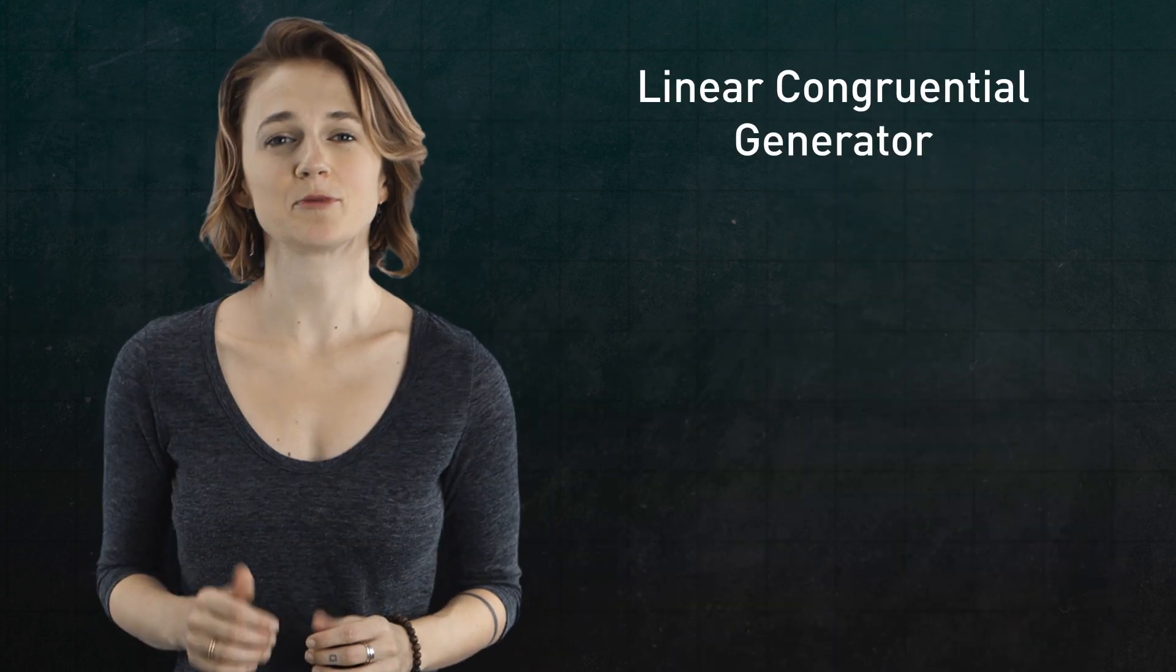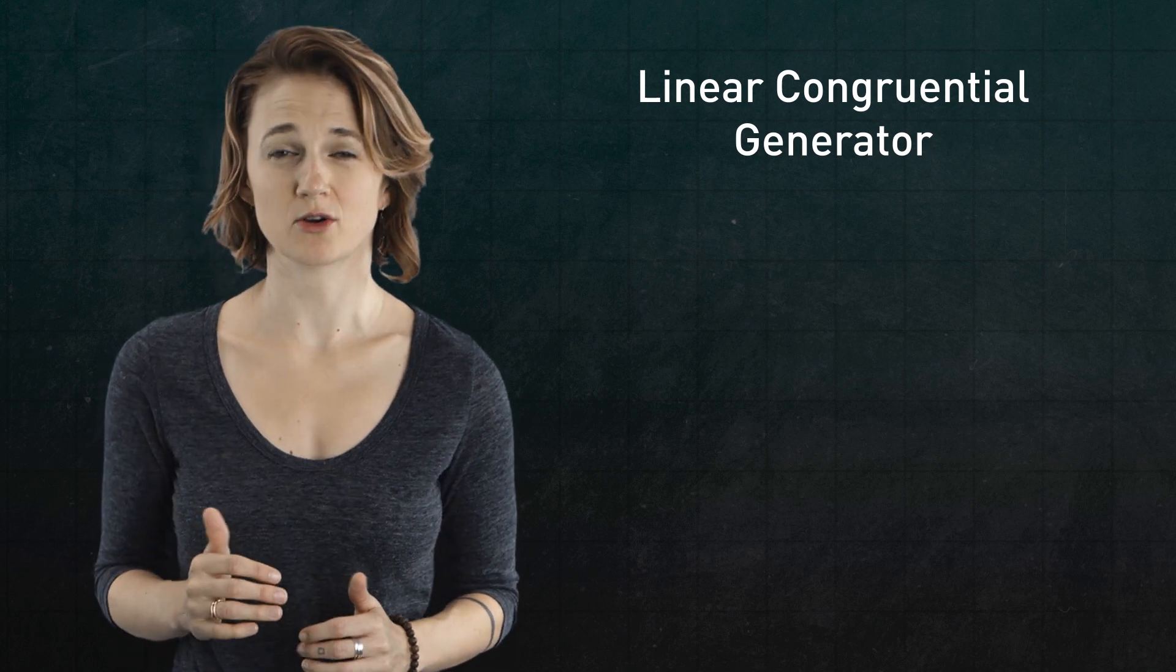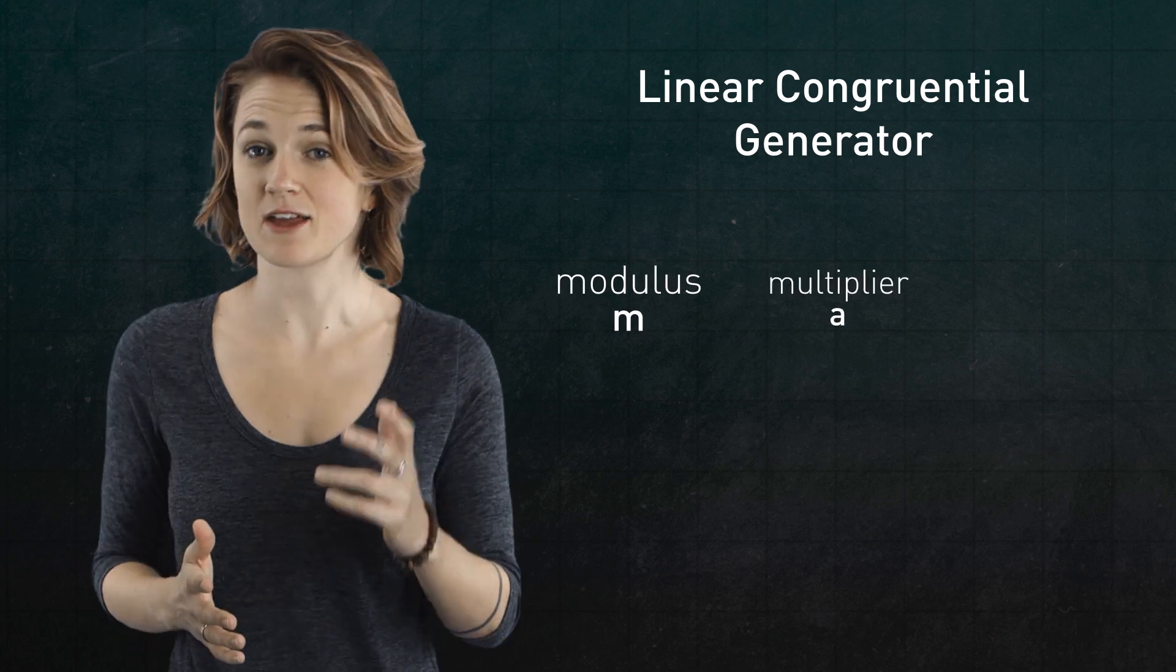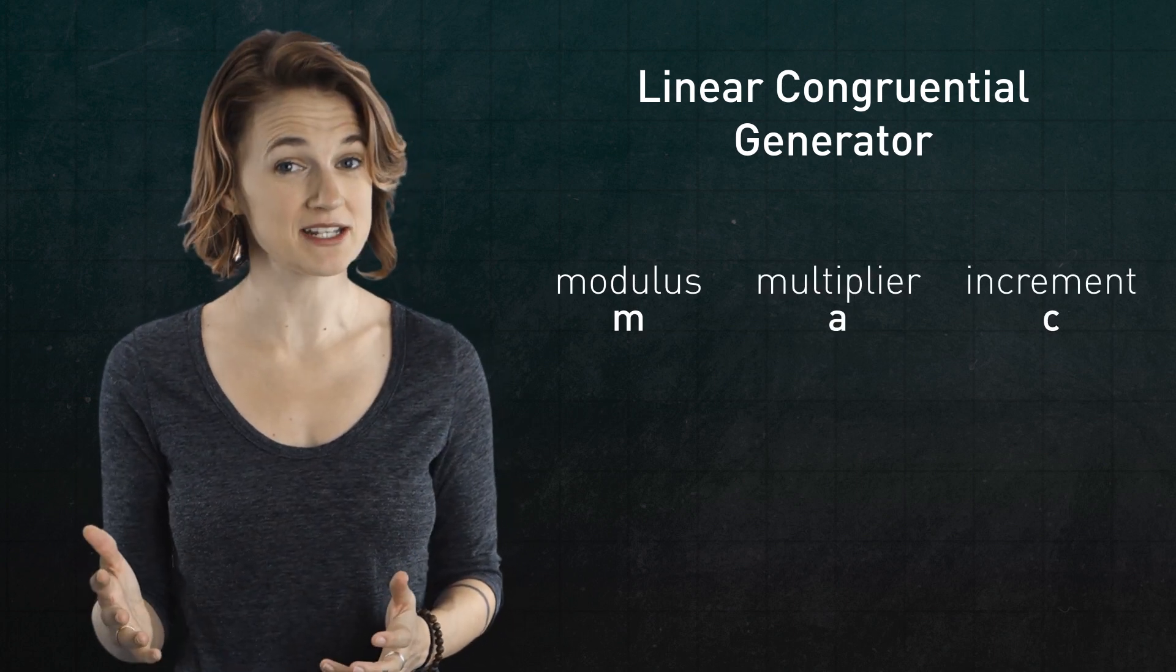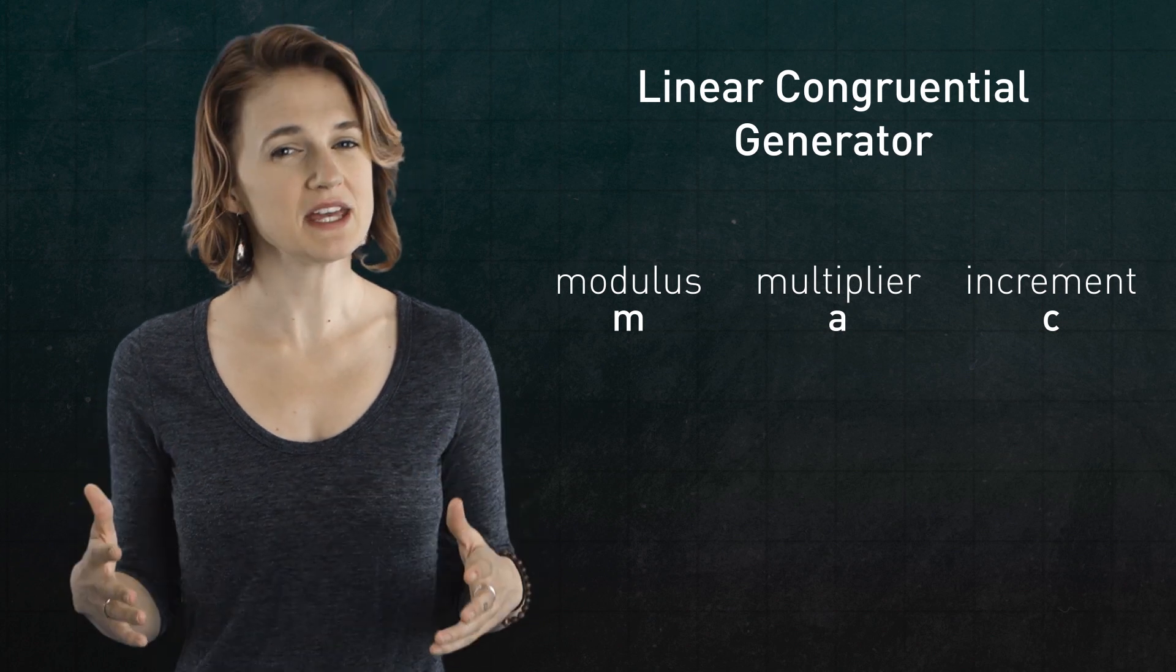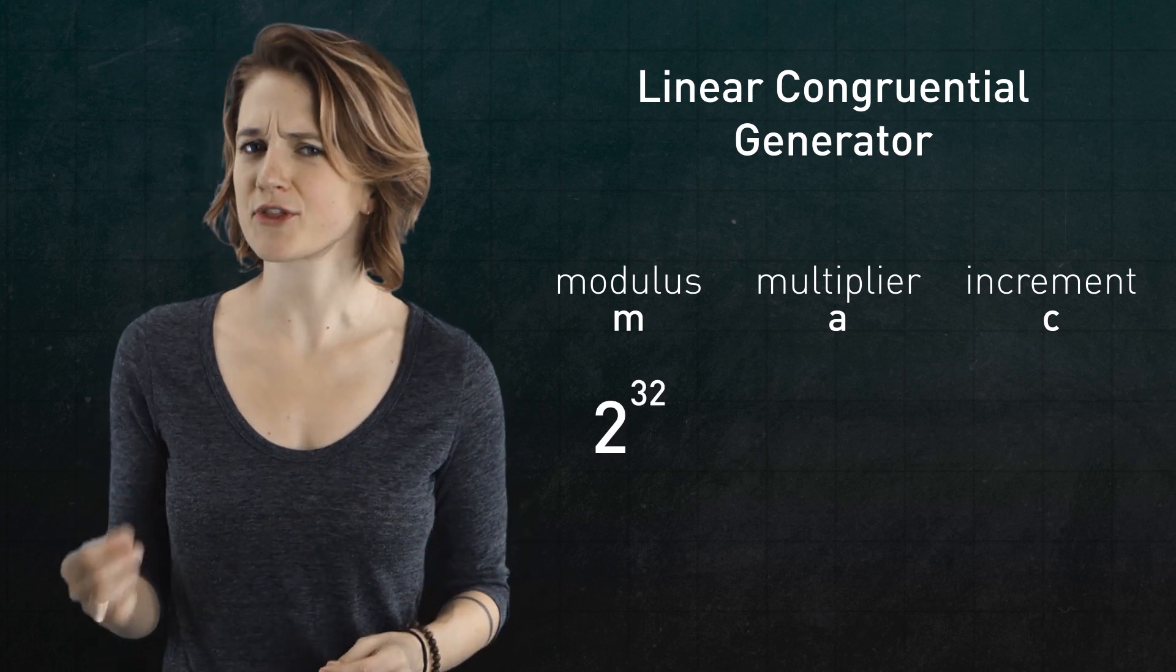A sequence generated by the linear congruential generator will also repeat. But if we select good values for m, the modulus, a, the multiplier, and c, the increment, then the period will be n. So we want to pick a big value for m, like 2 to the 32nd kind of big.